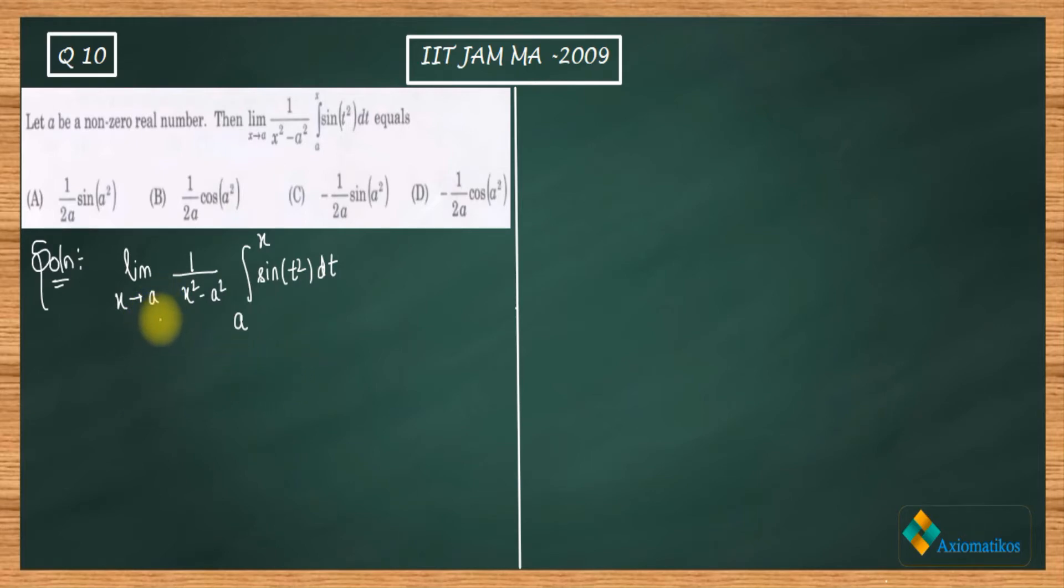Now just try to put your limit here. If you put x equals a, then this thing will be 0 because a squared minus a squared is 0. On the integral part you will also have 0 because your integration is from a to a. Limits are constant, so area under the curve will be 0.